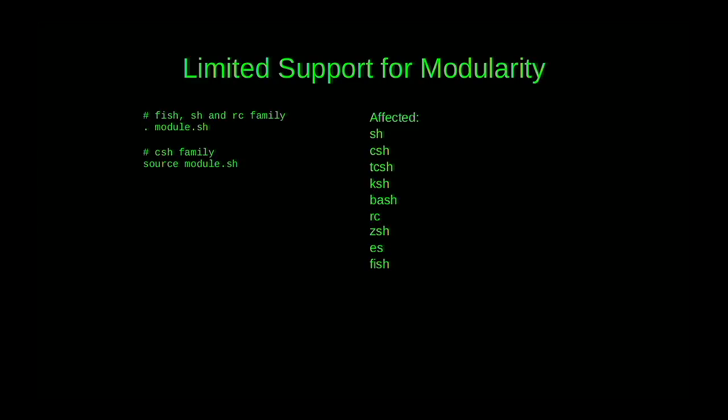There's very limited support for modularity — I'd almost call it no support. The only thing you can do in a standard Unix shell is source a file, which just dumps it into the current environment. Again, you have to worry about conflicts. It's hard to write modules and share them with other people. There's no equivalent to CPAN or pip for the shell.